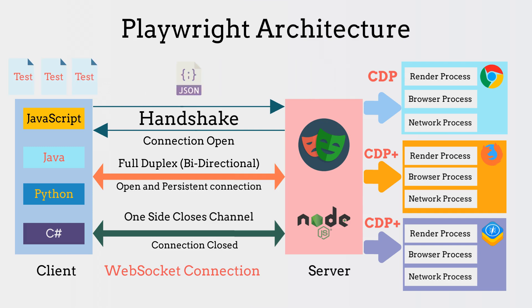Playwright communicates all requests through a single web socket connection which stays in place until all test execution is completed. Since commands are sent on a single connection, chances of test failure or flakiness are less and commands are executed quickly.